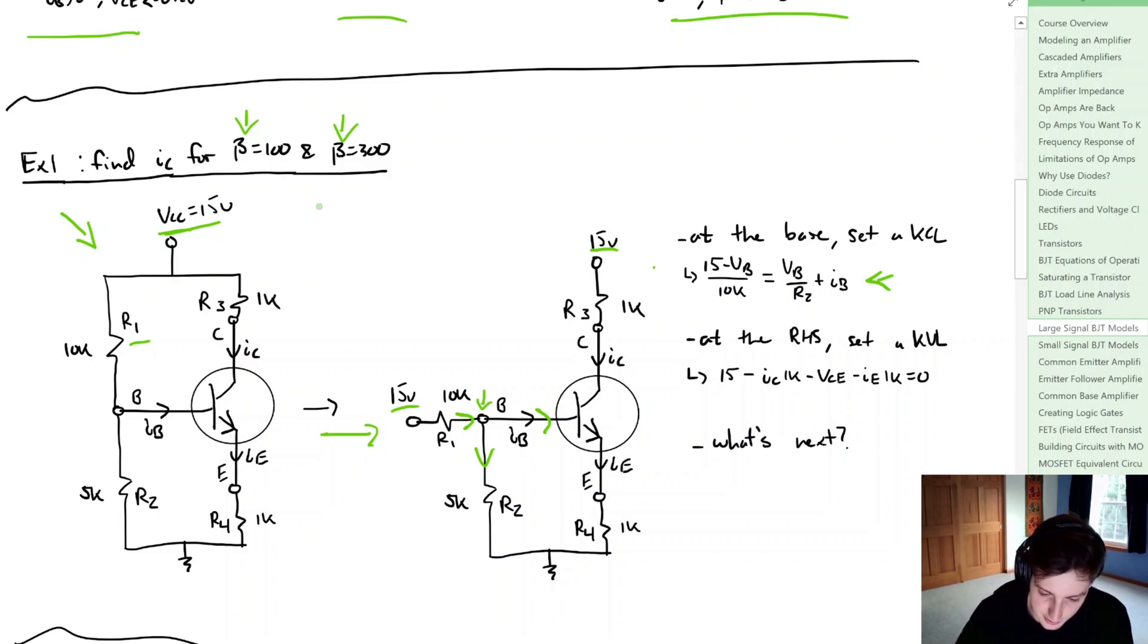If we look at the right hand side, we're going to do a KCL for the collector to ground. We simply get that 15 minus the voltage drop of R3 minus VCE minus the voltage drop of R4. Again that's going to be equal to 0. So we have two equations and it appears that we have several unknowns. So what's next?